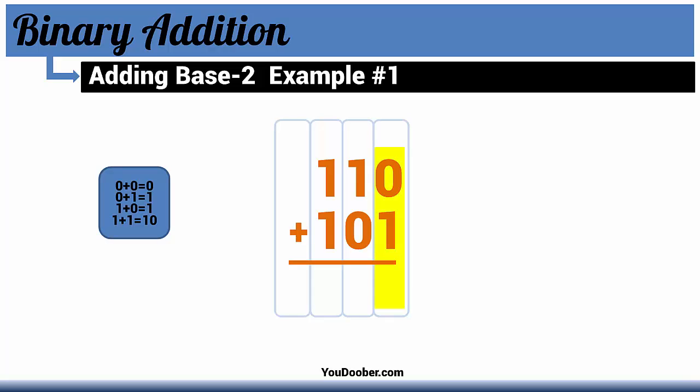0 plus 1, looking at the table, equals 1. 1 plus 0, looking at the table, equals 1. And 1 plus 1 equals 1, 0, looking at the table. Put our 0 down, carry the 1 to the next column. Now we have that carried 1 and we're just going to bring that down.